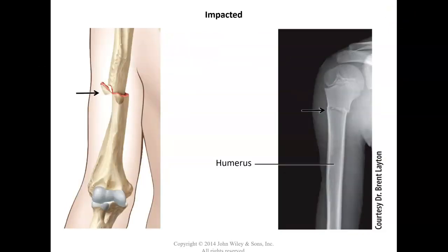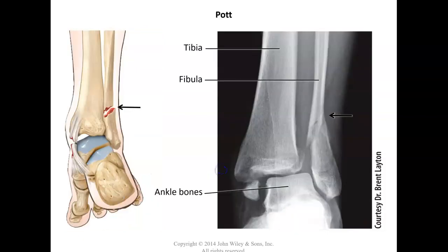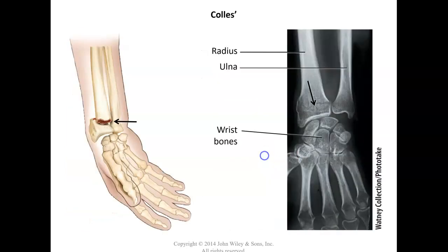Next is the impacted break, where the bone ends come toward each other and crush together. There's also the Pott's break, found in the ankle with the fibula. Then there's the Colles break, found in the wrist. Looking at that X-ray, the growth plates are closed and the wrist bones are close together, so you can tell this belongs to an adult.